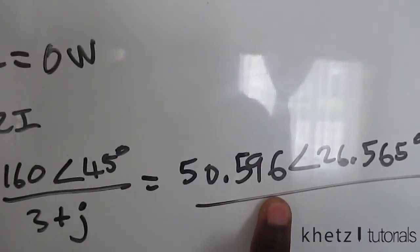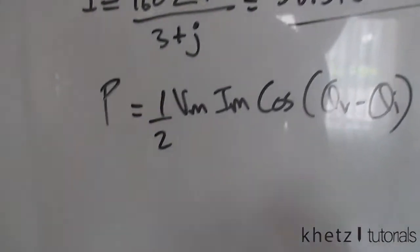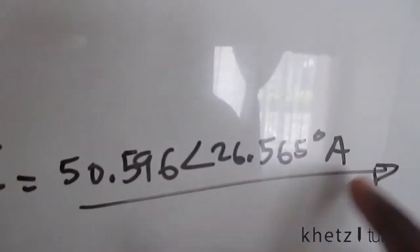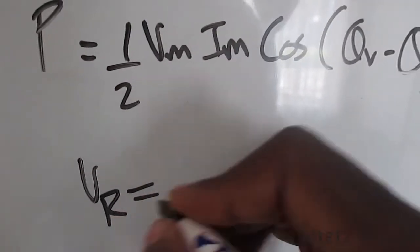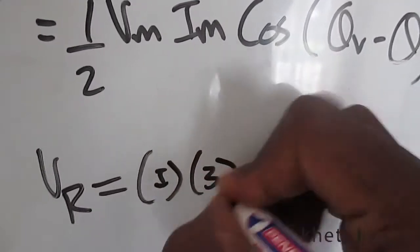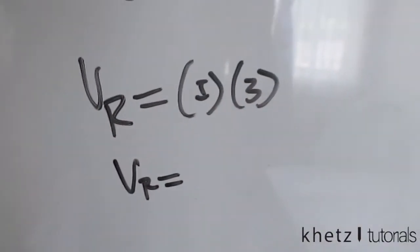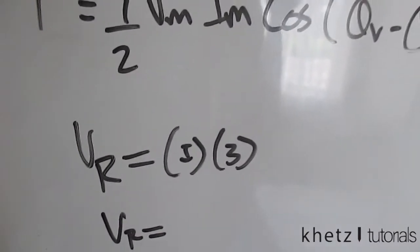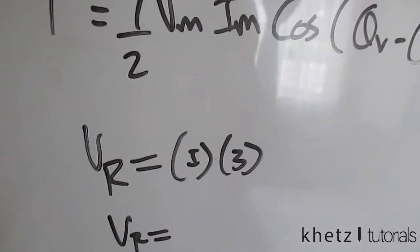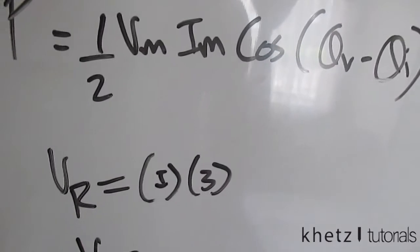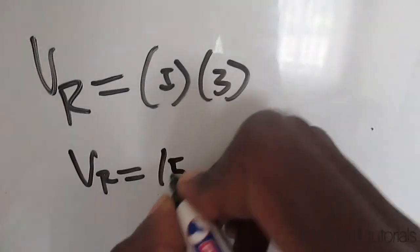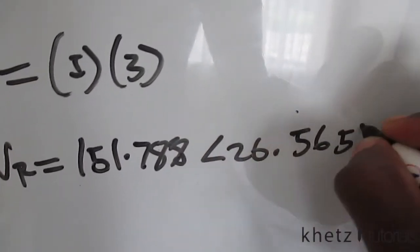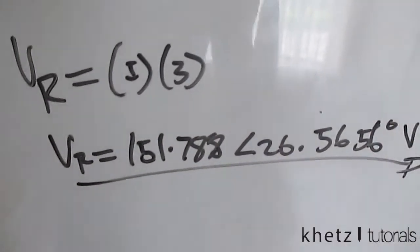We can find the voltage across the 3-ohm resistor by multiplying the current by the resistor value — this is Ohm's law: V = IR. Taking the current found above and multiplying by 3, we get the voltage across the resistor: 151.788 volts at an angle of 26.565 degrees.